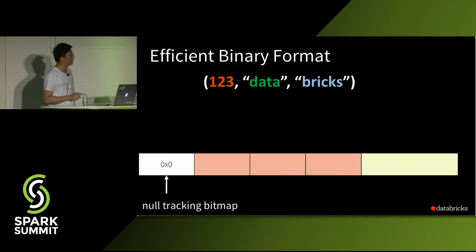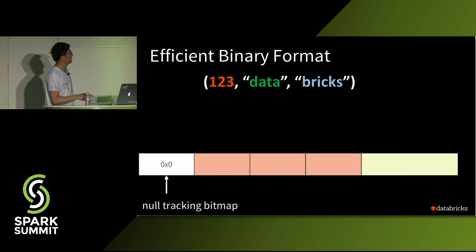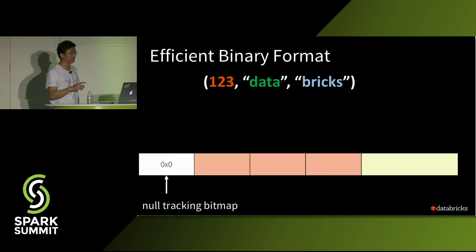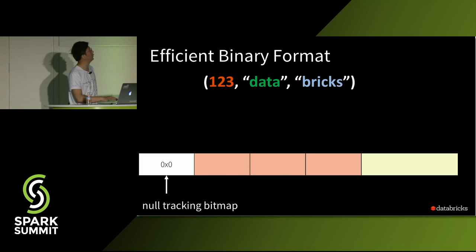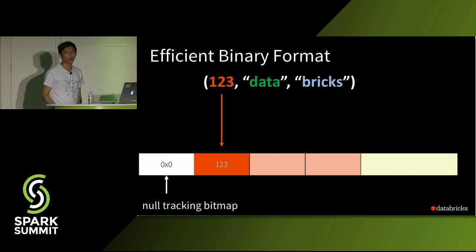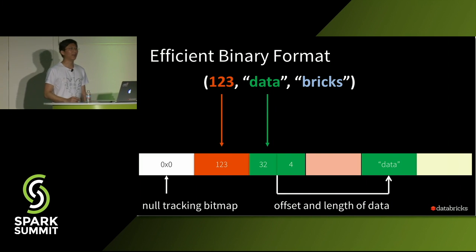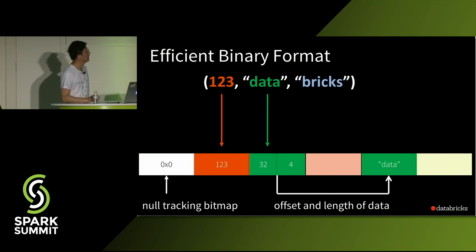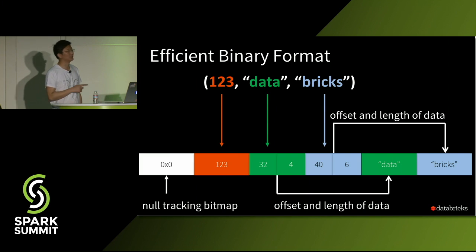A record in this binary format has three sections: a null-track bitmap (which quickly tells if a column is null or not), an offset region, and a data region. For a fixed-size column like an int, we simply inline the value into the offset region. For a variable-length value like a string, we store its offset and length in the offset region and put the actual data in the data section. Similarly, the third column is also written into the binary format this way.